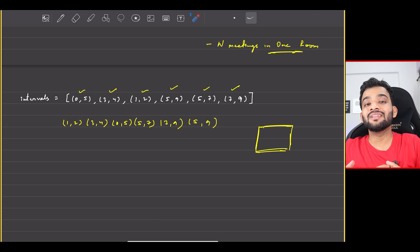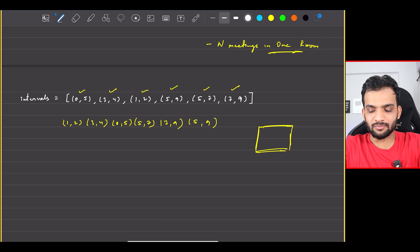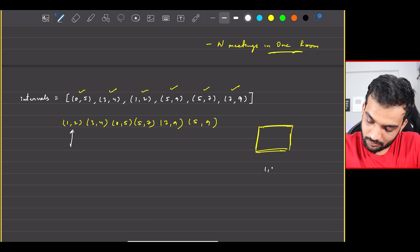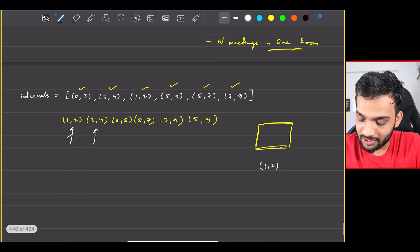So I'll try to iterate. Can I perform (1,2)? I can. So one meeting done. Can I perform (3,4)? I can, because the other meeting ends at 2.